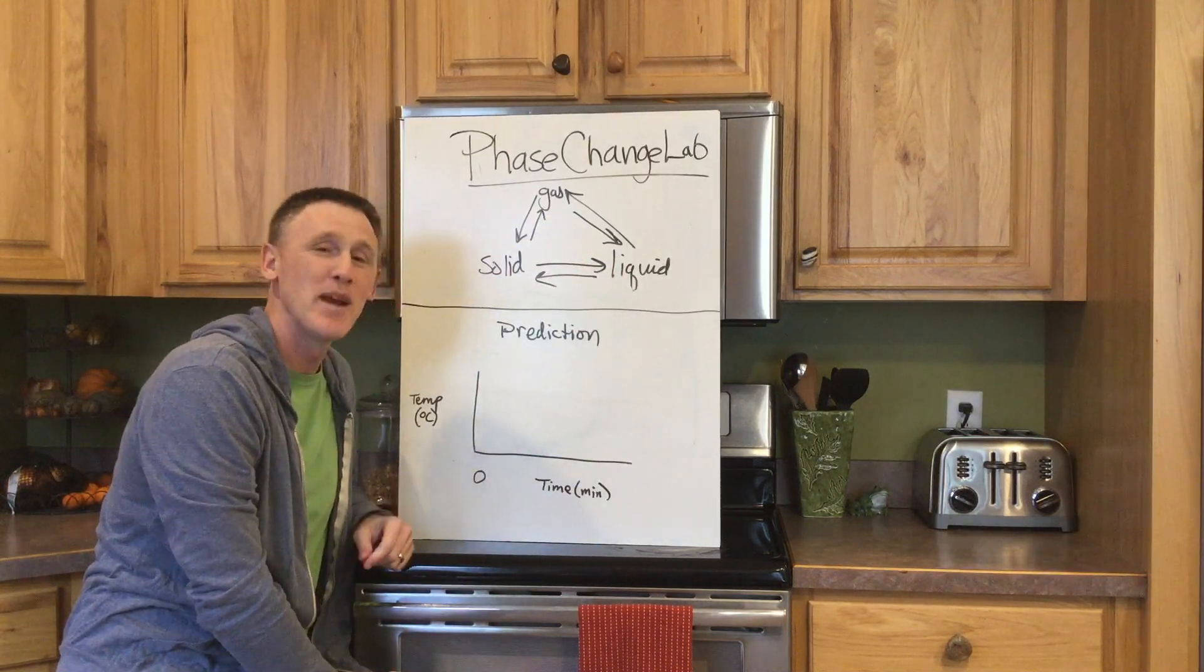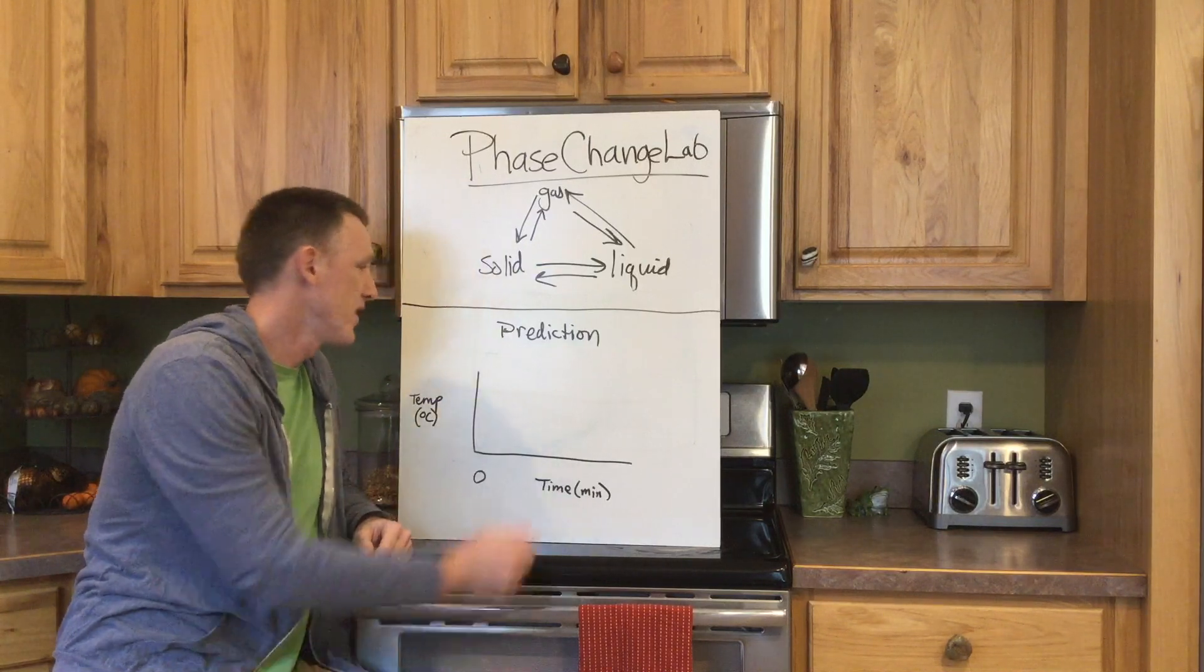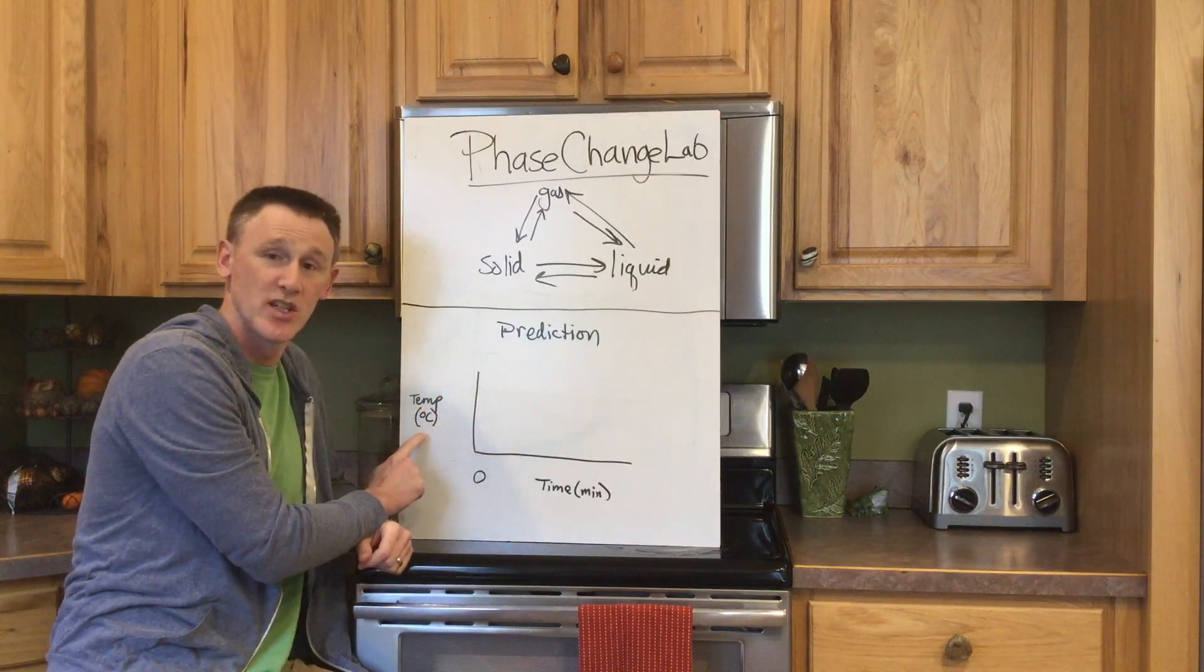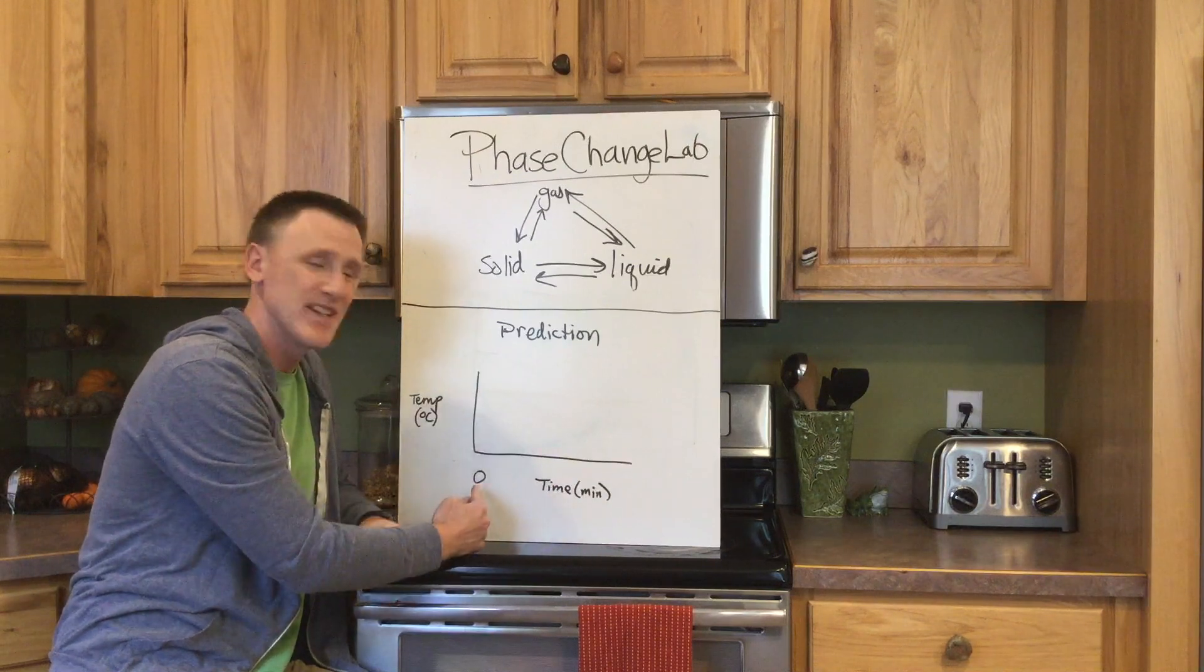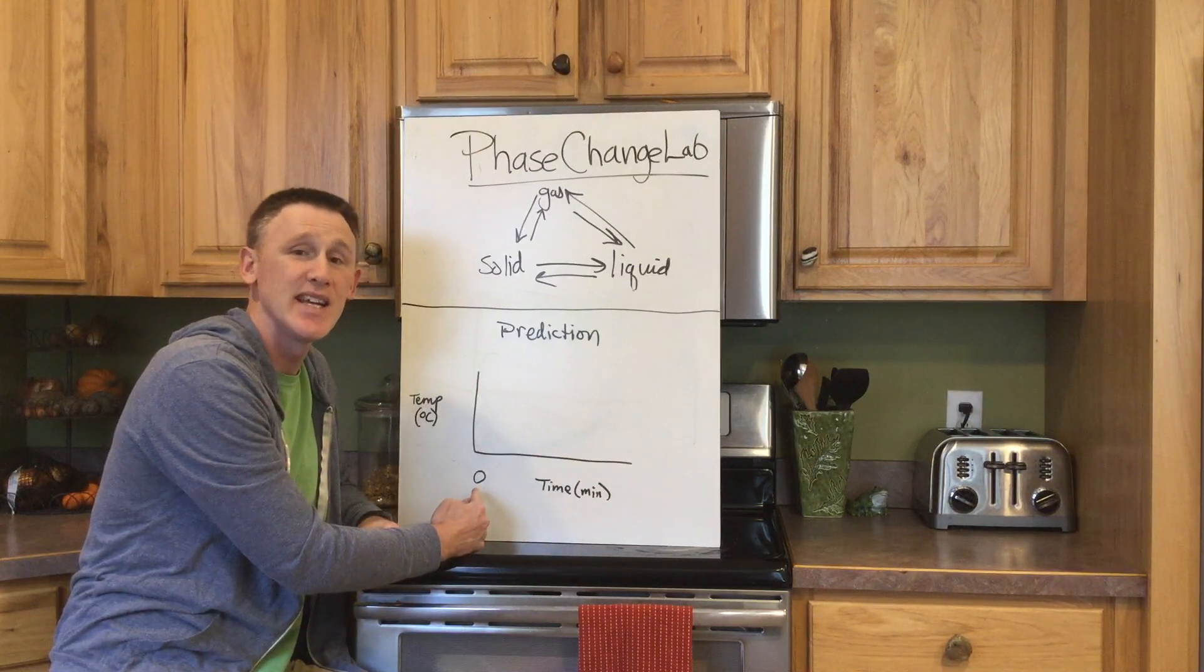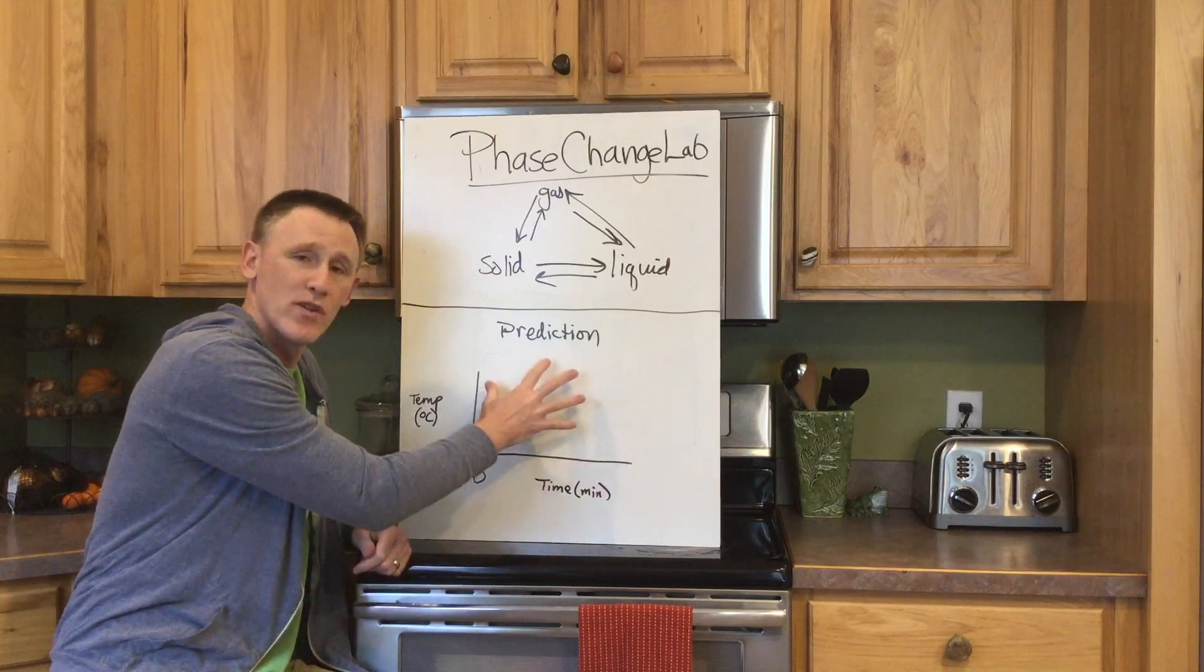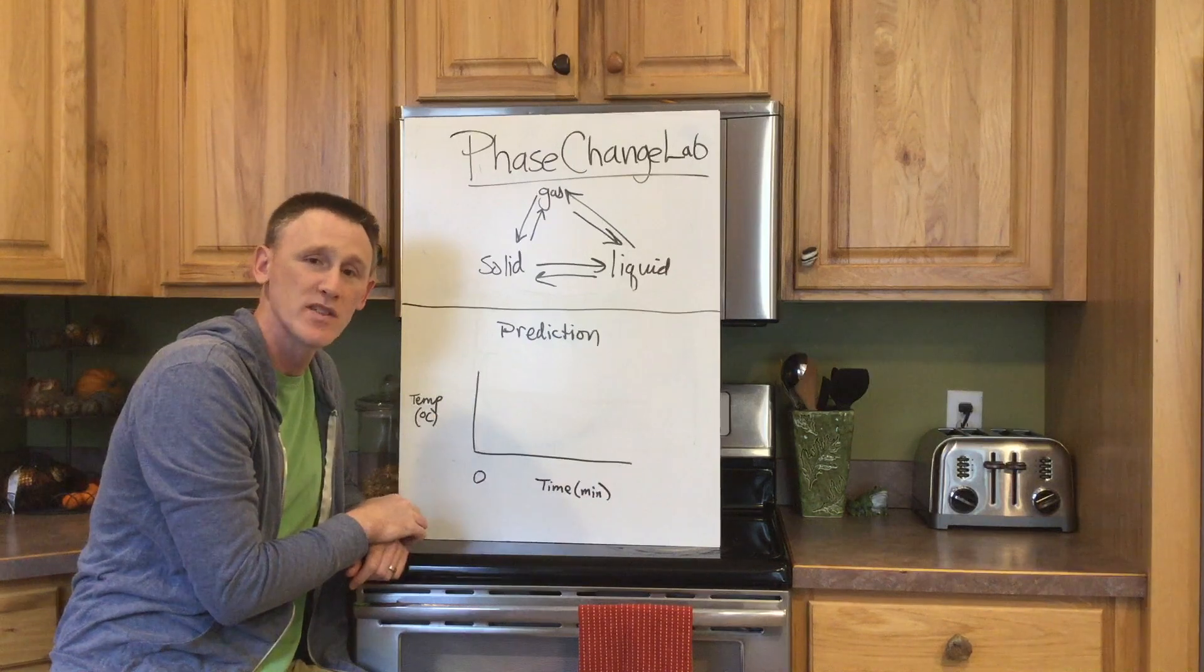We will first need to make a prediction on your lab so you can see the space provided for that. With your prediction I just want you to make a graph. We have a y-axis here with temperature with degrees Celsius. We have an x-axis over here with time and minutes. We'll be starting at zero time in minutes as we add heat to this frozen water and we want to draw a line over here that shows what you think is going to happen to the temperature over the course of this lab.